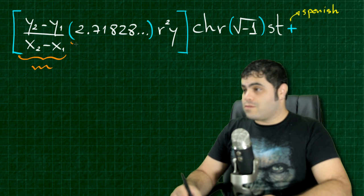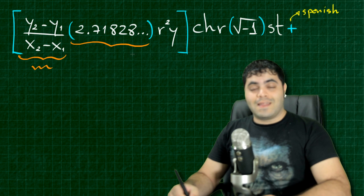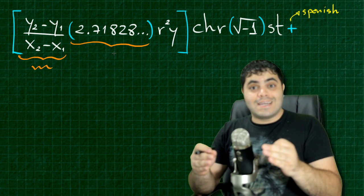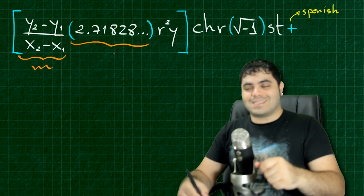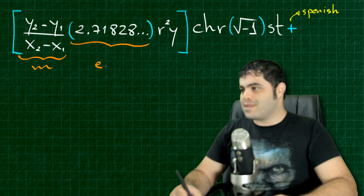And this thing right over here, this number, this is an irrational number, which is the number E, a very famous mathematics number. Number E, right?